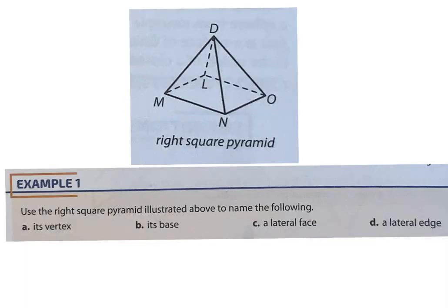Using the right square pyramid to illustrate: the vertex is the point that all the base segments head toward — in this case point D. The base is the polygonal figure. A pyramid will have one base, while a prism will have two identical bases. Pyramids have one base; prisms have two.